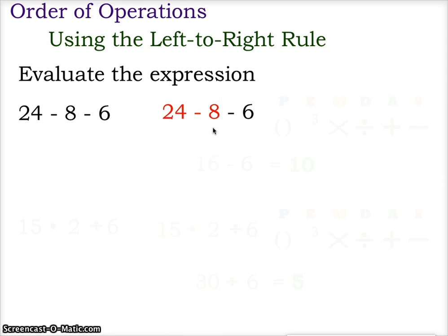So we're just going to simply work left to right, and we're going to begin by 24 minus 8, giving us a value of 16 minus 6. And then 16 minus 6, of course, is 10. So again, we used the PEMDAS. We did multiplication, division, addition, and subtraction left to right. Because there was no multiplication and division, we simply went straight to the subtraction aspects of this expression, and we worked left to right.